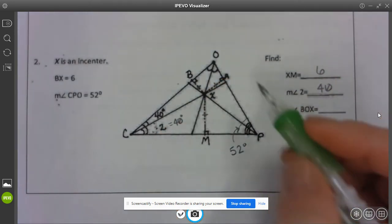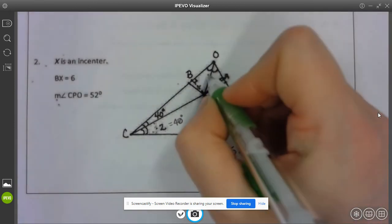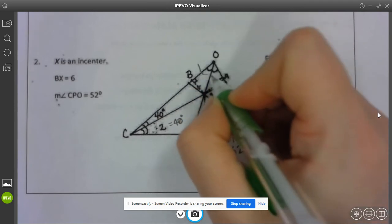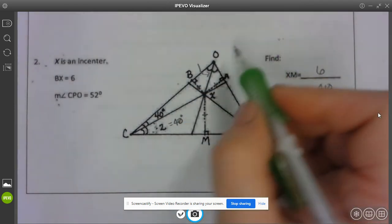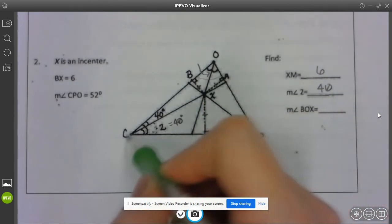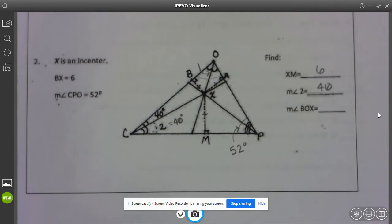So this is 40 and then I have to find BOX so the next thing I have to find is this angle here. That's my last thing to find. Well I can find this big angle here B or excuse me COP by doing 360 minus 52 because that's this angle here.